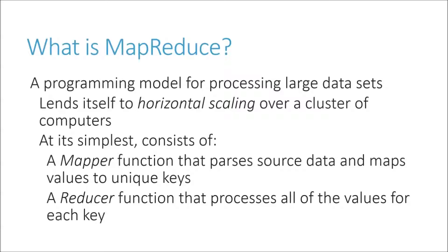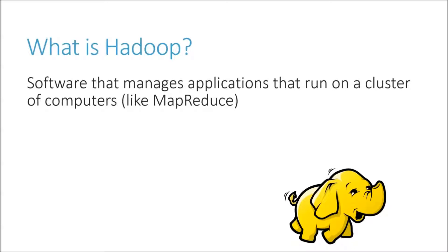At a high level, that's all MapReduce is: a mapper that extracts the information you care about and a reducer that does some function on all of the values for a given key. It'll make more sense when we look at an example later on. So what's Hadoop? How does it fit together with MapReduce? Hadoop is the system that runs MapReduce — it's what actually manages the cluster for you.